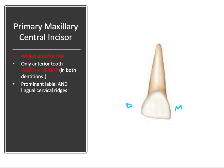For the primary maxillary central incisor — this is the widest anterior tooth mesiodistally. Of all the anterior teeth in the primary dentition, this is the widest mesiodistally, and it's the only anterior tooth where its width is greater than its height. This is actually true for both dentitions — it's the only anterior tooth in either primary or permanent dentition that is wider than it is tall. It also has prominent labial and lingual cervical ridges.